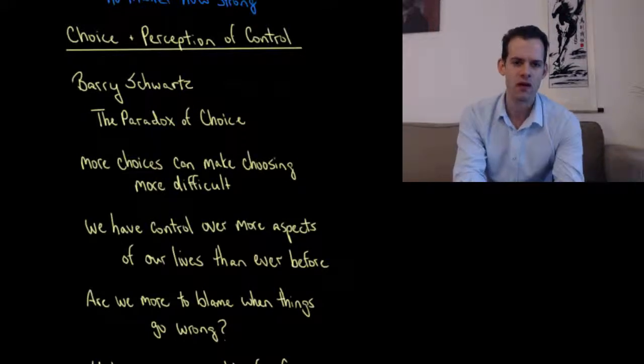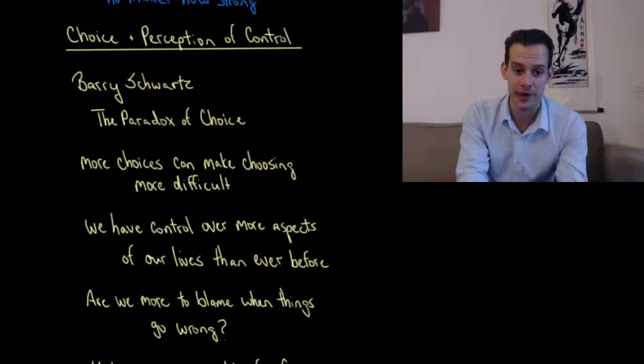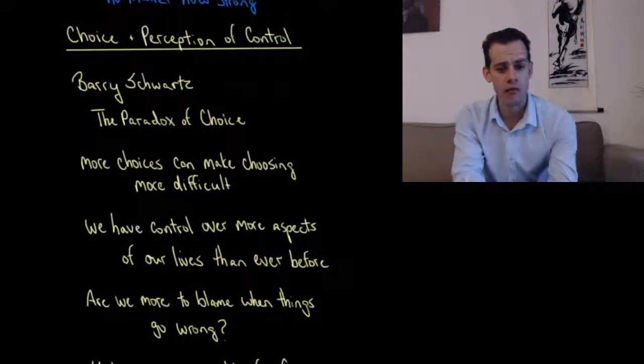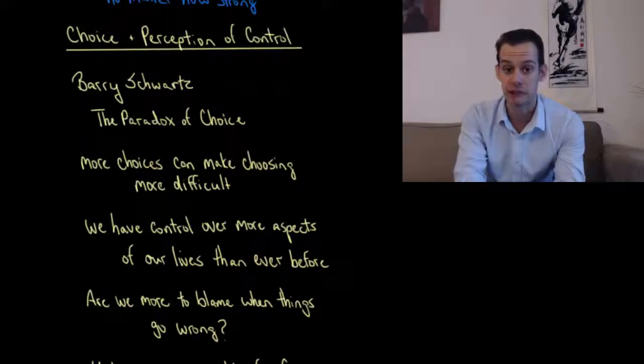And if you're unhappy with the result, you might blame yourself. You might think, I should have chosen differently. If I had chosen another option, maybe I'd be happier now. So we have more control over more aspects of our lives than ever before. But with this increased choice, we have greater feelings of control, but potentially greater feelings of blame.